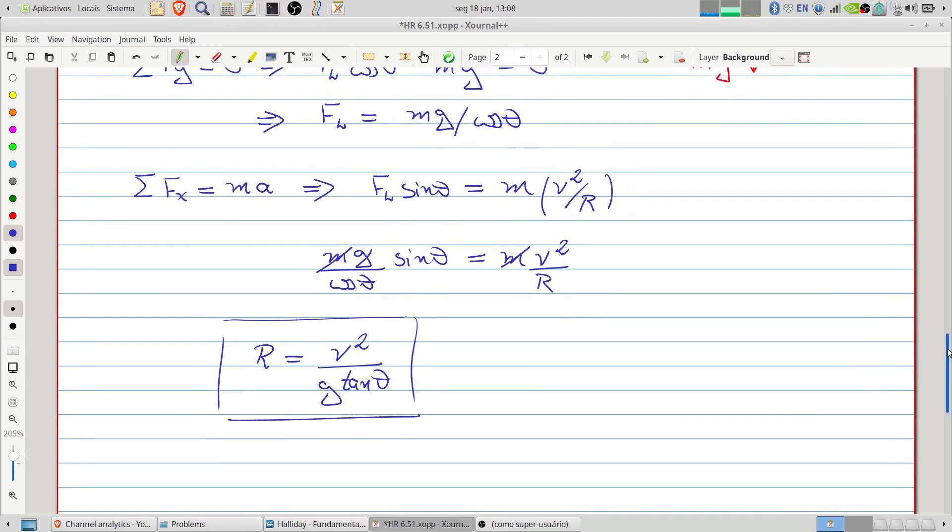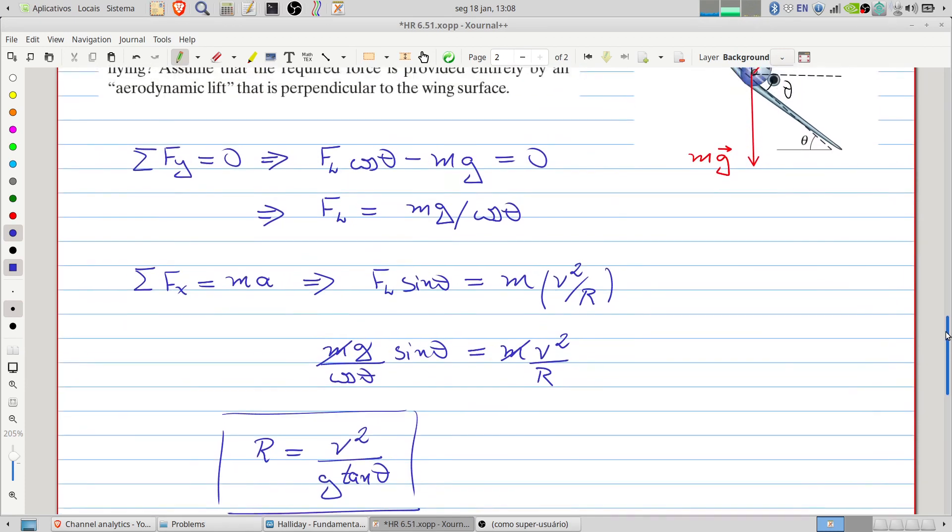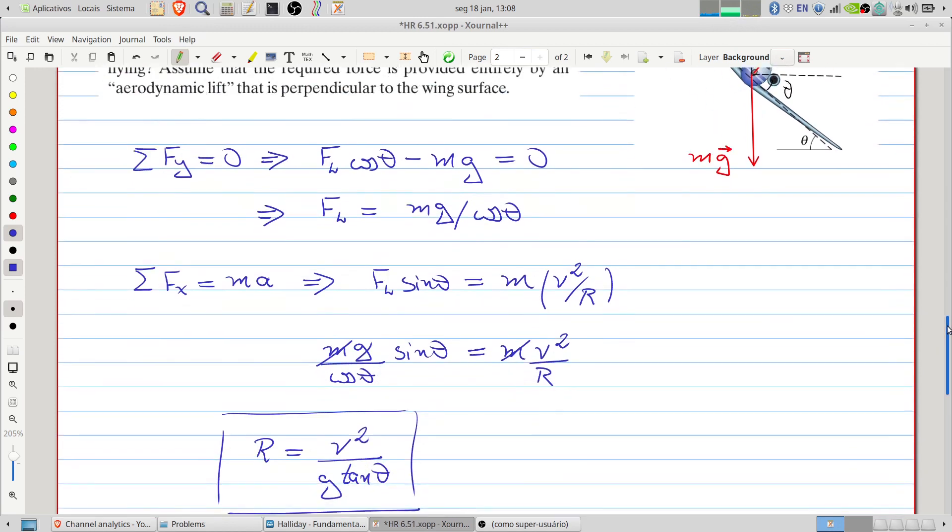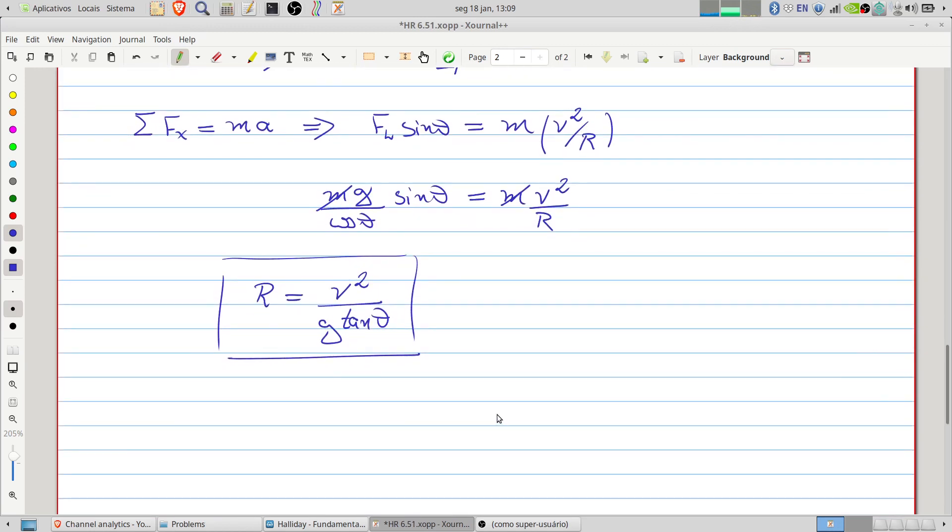But we have to substitute our numerical values. And it's necessary to be careful because here we have our speed in kilometers per hour, and our acceleration normally we write it in meters per second. So let's transform the velocity to meters per second.